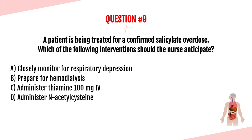Question number nine. A patient is being treated for a confirmed salicylate overdose. Which intervention should the nurse anticipate? Is it A, closely monitor for respiratory depression; B, prepare for hemodialysis; C, administer thiamine 100 mg IV; or D, administer N-acetylcysteine? The answer is B — prepare for hemodialysis. Salicylate overdoses can quickly result in metabolic acidosis and lead to acute kidney injury and failure, so we want to dialyze these patients early for the best outcomes.